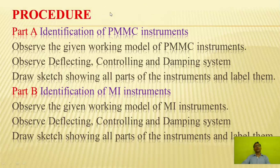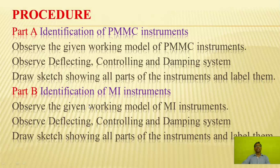Now you will have to do the practical. The procedure to follow: In Part 1, identification of PMMC type instruments — you have to observe the given working model of a PMMC type instrument, observe the deflecting, controlling, and damping systems, draw a sketch showing all parts of the instrument, and label them. The same procedure is followed for Part B, identification of MI type instrument. Now you have learned the theoretical part of the experiment.